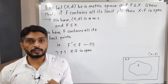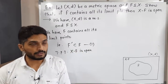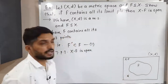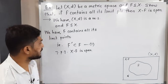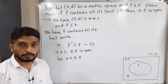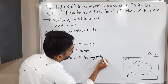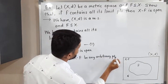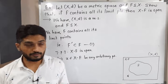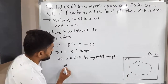What is the technique to prove any set is open? We take any arbitrary point and try to find a ball around that point which is a subset of that set, then we declare the set is open. Same thing I will do here. Let x belong to X minus F — this is any arbitrary point. So x belongs to X minus F means x does not belong to F.